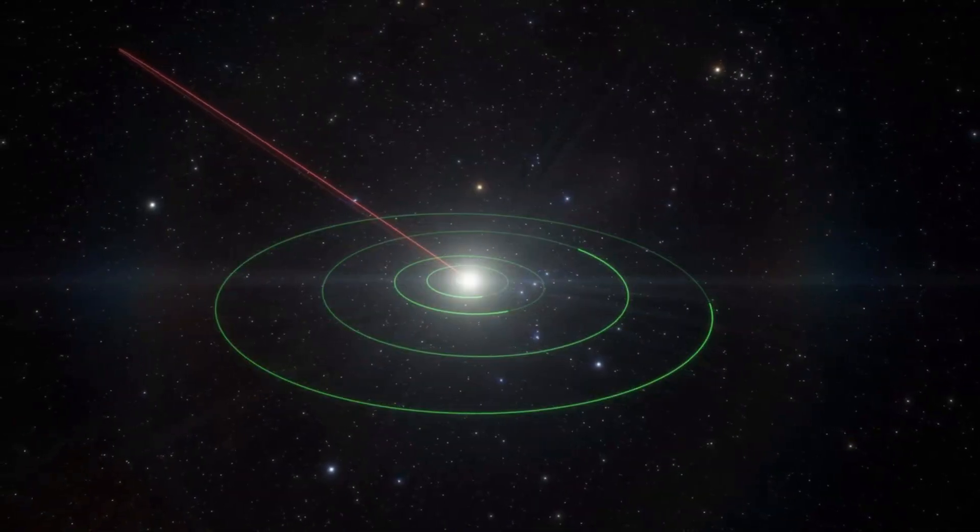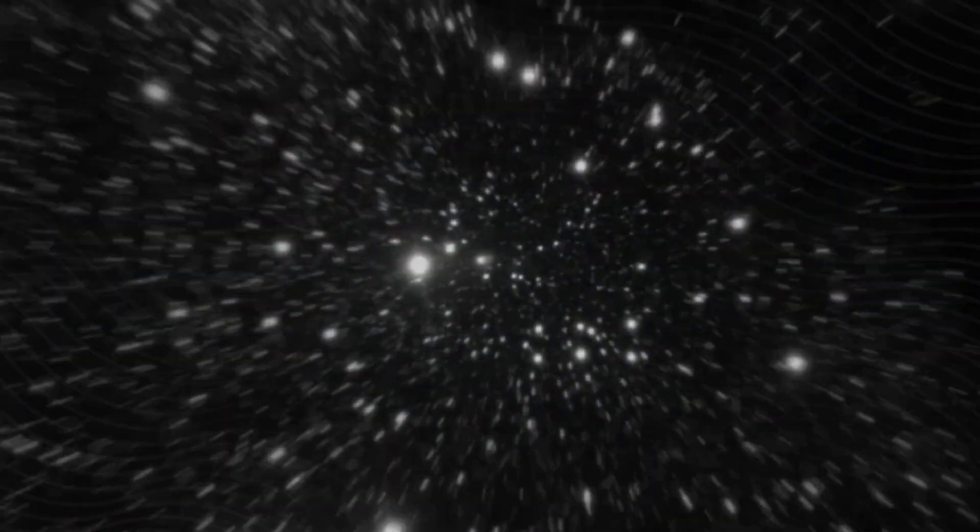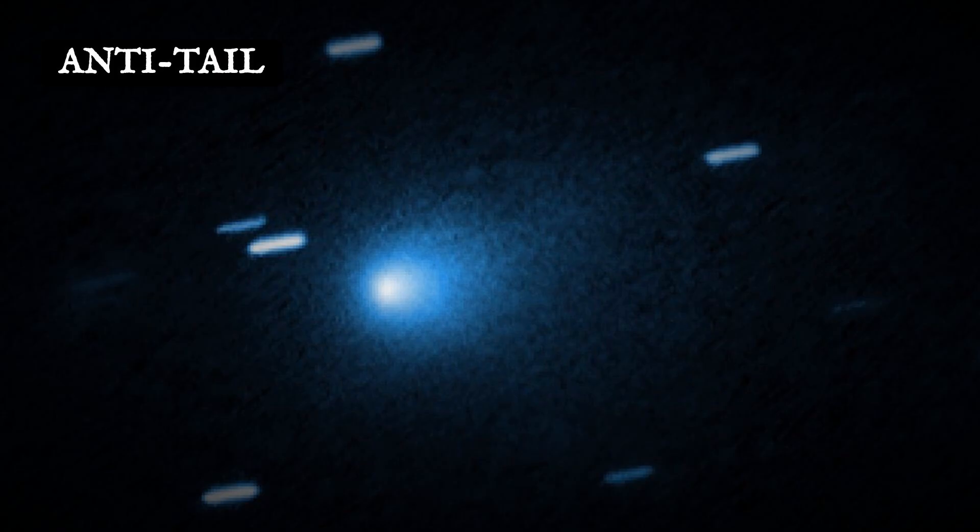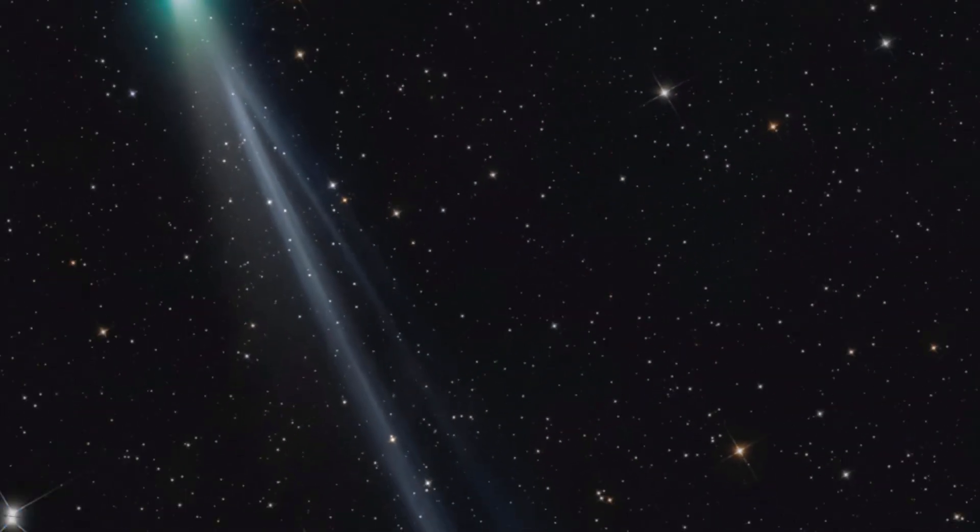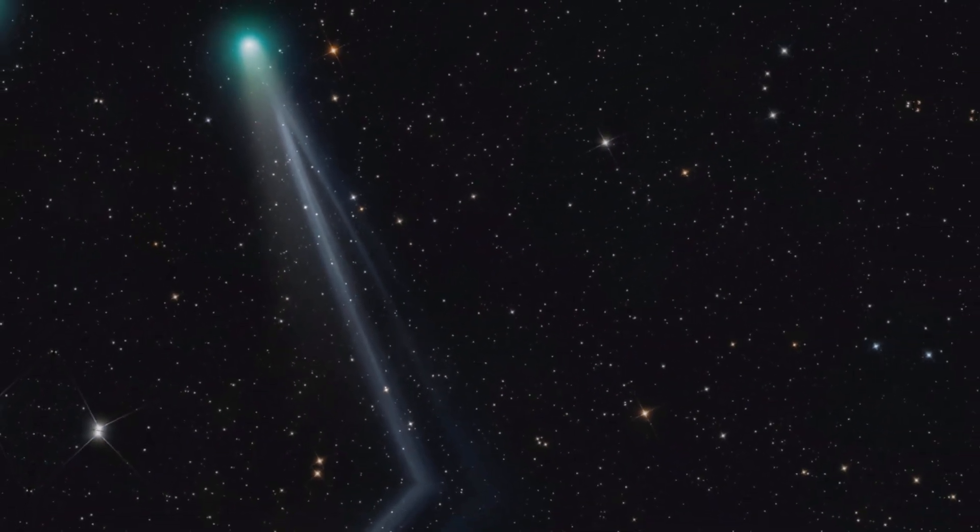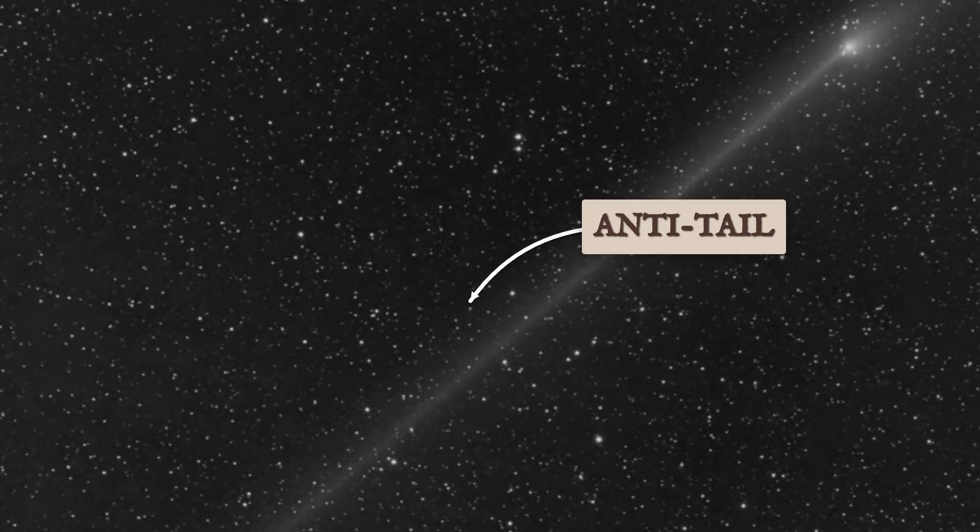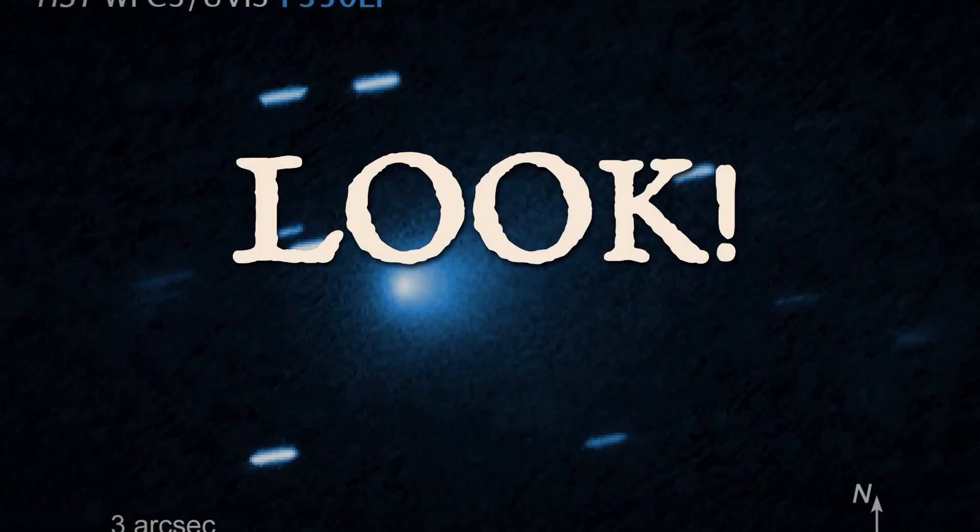When our planet crosses the plane of the comet's orbit, sunlight catches a sheet of dust that trails behind the comet, making it look like a tail is reaching forward. The anti-tail isn't a separate structure. It's the same dust, seen from a special angle, creating a striking illusion that stands out in images. Once you know what to look for, the anti-tail is unmistakable.